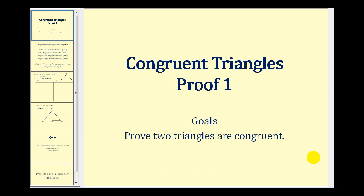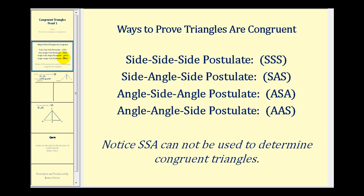Welcome to the first example of a proof showing two triangles are congruent. Remember the four postulates that we can use to prove two triangles are congruent are side-side-side, side-angle-side, angle-side-angle, and angle-angle-side. Notice that side-side-angle as well as angle-angle-angle cannot be used to prove two triangles are congruent.